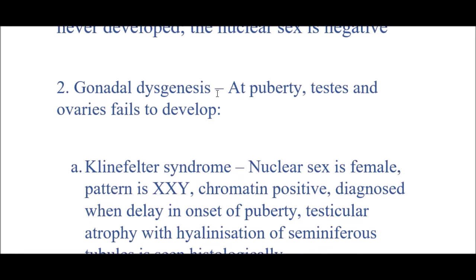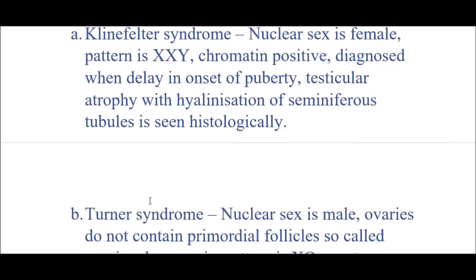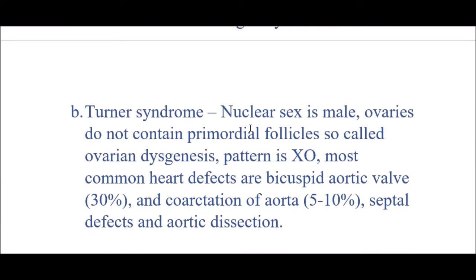The second is gonadal dysgenesis, meaning at puberty the testis and ovaries fail to develop. Types include Klinefelter syndrome, in which nuclear sex is female, pattern is XXY, chromatin positive, diagnosed when there is a delay in onset of puberty and testicular atrophy with hyalinization of seminiferous tubules. Turner syndrome has nuclear sex male, pattern XO, ovaries without primordial follicles — called ovarian dysgenesis. Common associated heart diseases include bicuspid aortic valve, coarctation of aorta, septal defect, and aortic dissection.